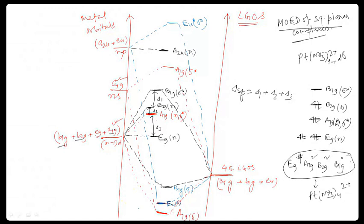So if pi orbitals take part in the MO diagram, then what happens? If it's a pi-donor ligand, then what happens?